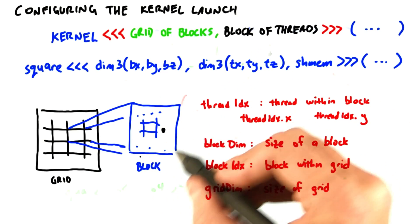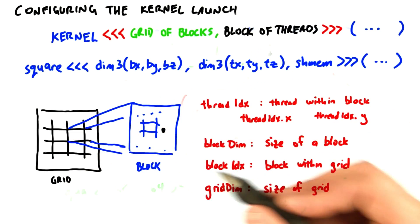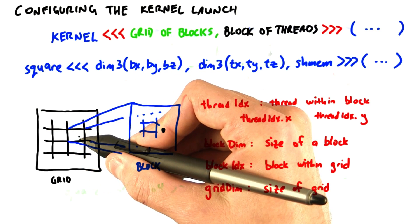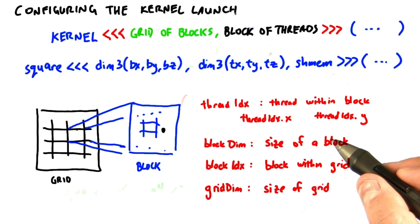We know those two things for a block. We know the analogous things for a grid. So blockIdx, for instance, is which block I'm in within the grid. Again, .x, .y, and .z.